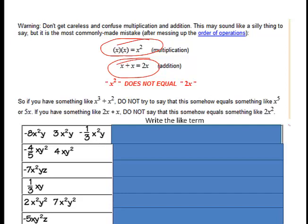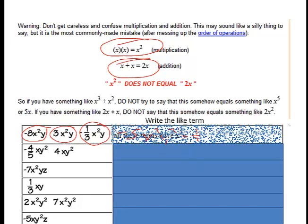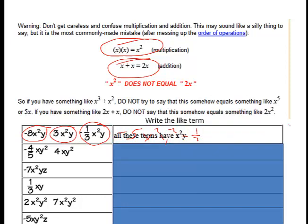Let's combine like terms. Looking at this first one: there's an X²Y² term, and there's another X²Y². So we can combine all of those. 8 minus 3 is negative 5, giving us negative 5X²Y². Then minus one-third X²Y². So negative 5 minus one-third gives us negative 4 and two-thirds X squared Y squared.